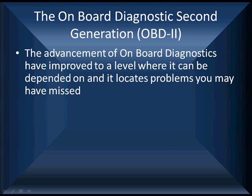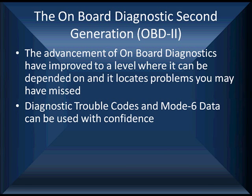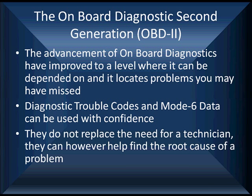OBD-2 has made great improvements. It's improved to a level where you can really depend on codes, and you can also depend on it to locate problems you may have missed during a diagnosis. Diagnostic trouble codes and Mode 6 data can be used now with a lot more confidence than in the old OBD-1 days — those were lousy codes. The good news back then was they didn't come back and identify problems you had missed. All of these codes still do not replace the need for a good technician, but they can help you find the root cause of a problem if you look deep enough.